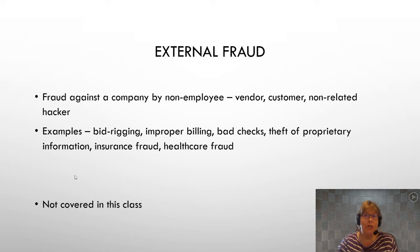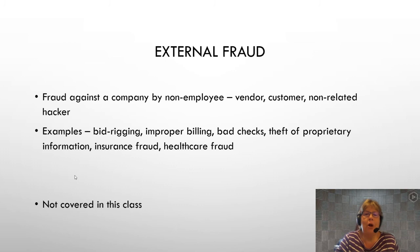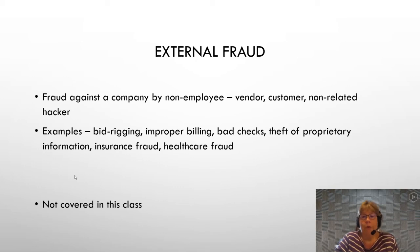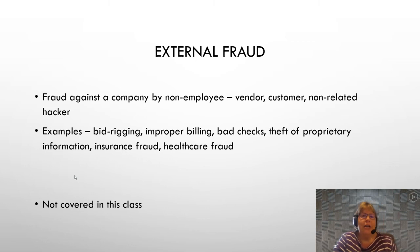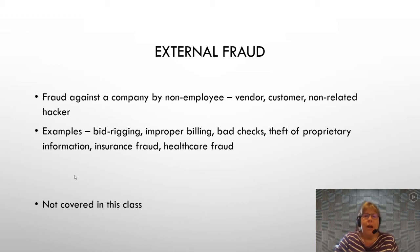Some examples of external fraud are bid rigging — having vendors collude with each other to take turns on who gets what bids. Other examples include vendors incorrectly billing over and over, writing bad checks, and doctors creating insurance or healthcare fraud. We're not going to cover those in class.